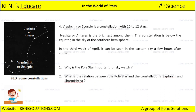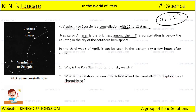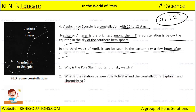Ruchik and Scorpio is a constellation with 10 to 12 stars. Jesta and Antara are the brightest among them. The constellation is below the equator in the sky of the southern hemisphere. In the third week of April, it can be seen in the eastern sky a few hours after sunset.